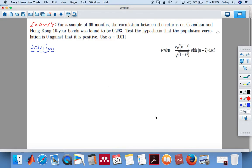Okay guys, this is one of the exam questions from past years. It says that for a sample of 66 months, the correlation between the returns on Canadian and Hong Kong 10-year bonds was found to be 0.293. Test the hypothesis that the population correlation is zero against that it's positive.